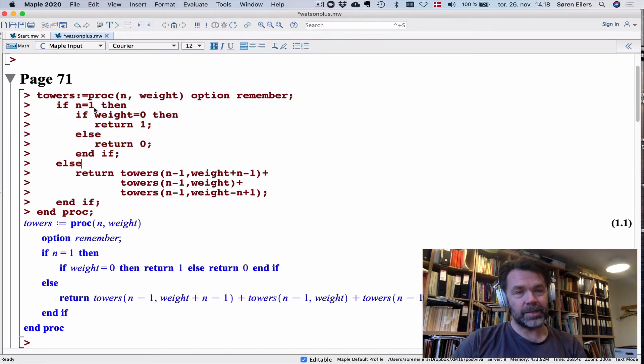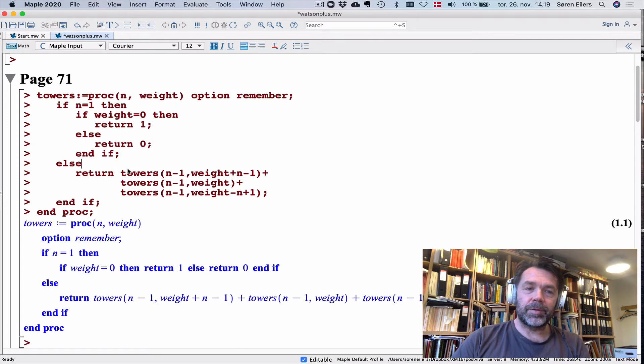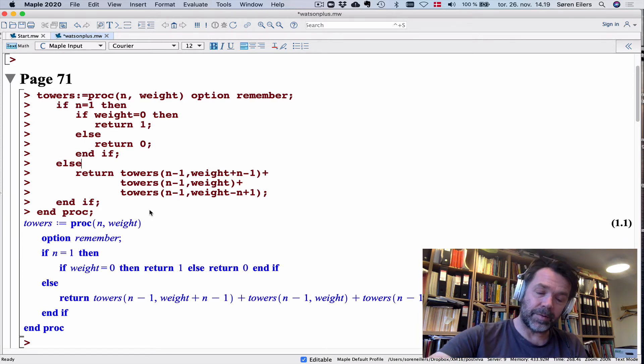If this is not the case, if n is not one, so I have more than one bricks, then I'm going to do a recursive computation. I'm dividing this up in three recursive calls corresponding to the three choices of putting the next brick on the base brick: one to the left, straight on top, or one to the right.